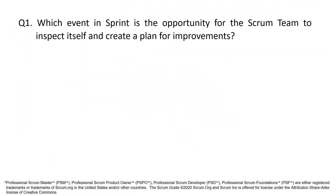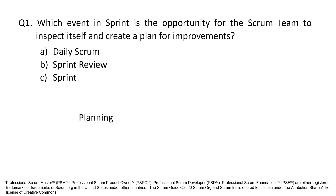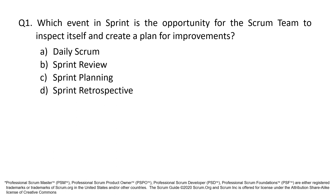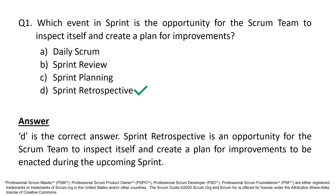Which event in Sprint is the opportunity for the Scrum team to inspect itself and create a plan for improvements? A. Daily Scrum. B. Sprint Review. C. Sprint Planning. D. Sprint Retrospective. D is the correct answer.